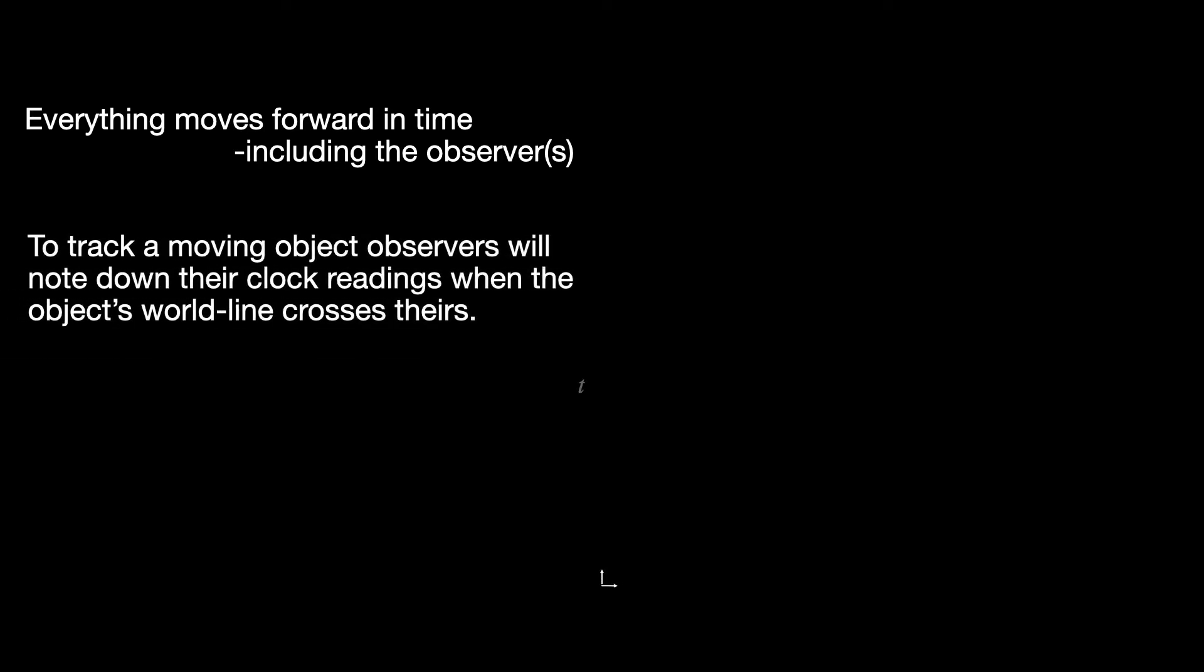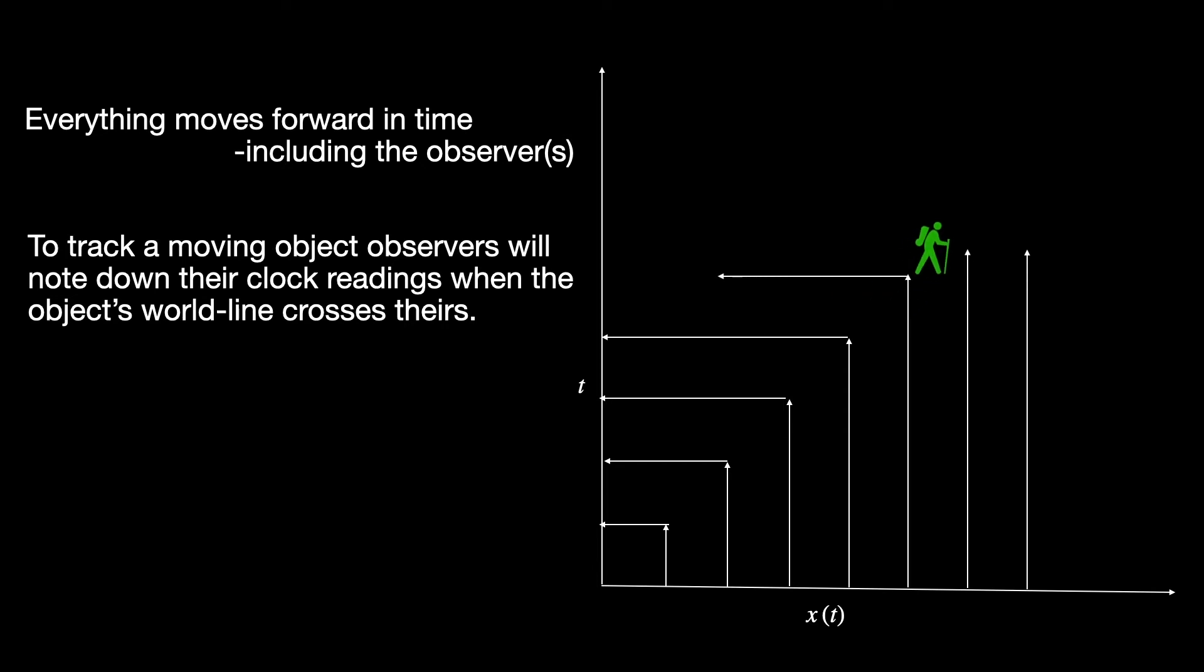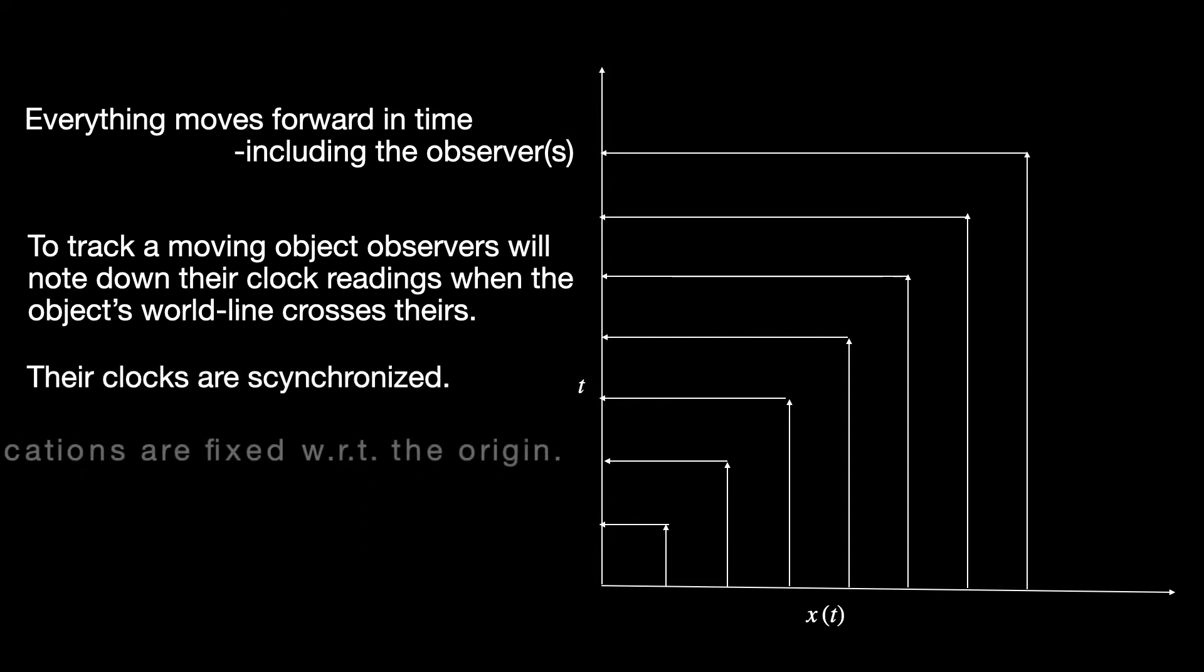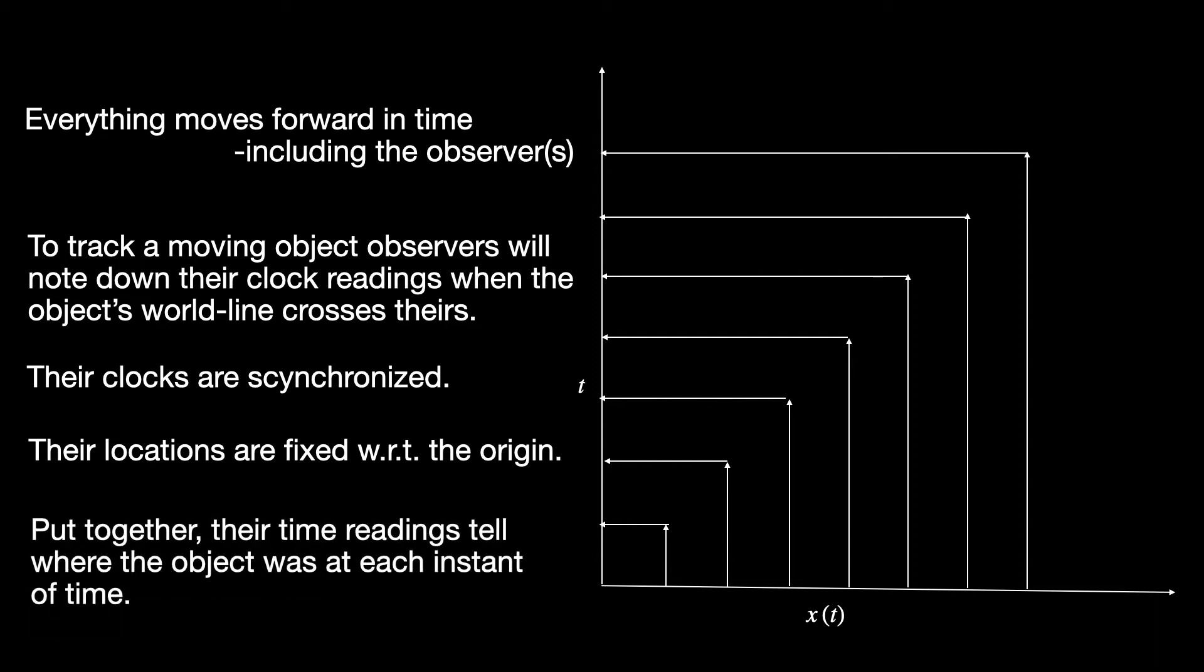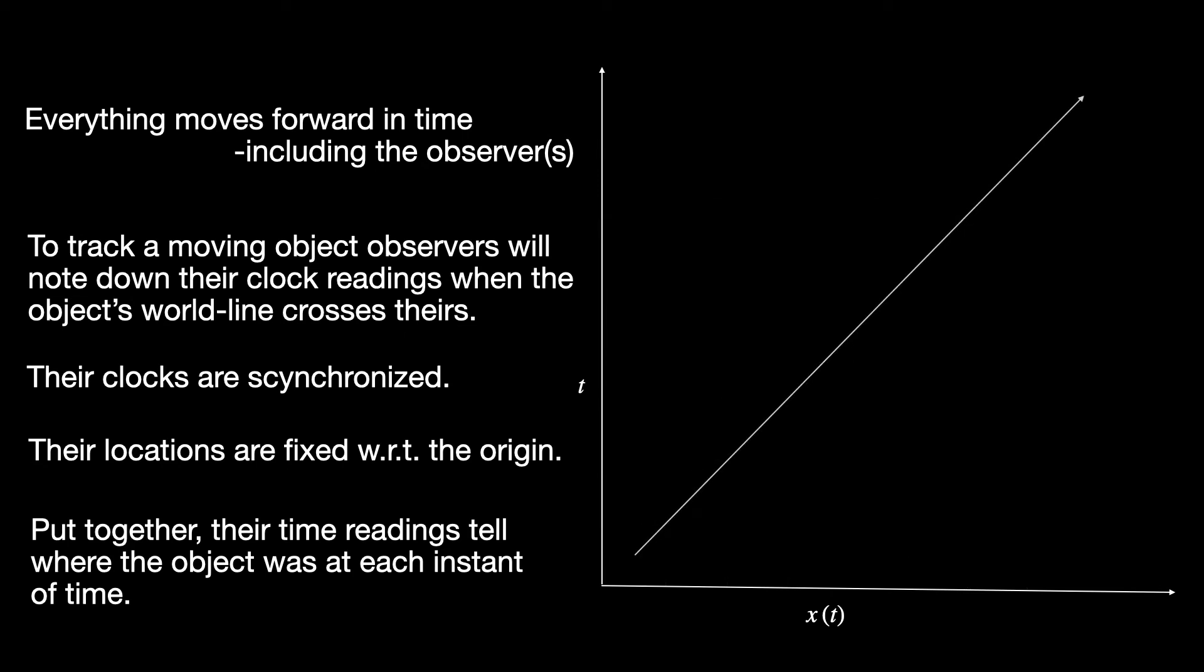To track a moving object, the team of observers in S1 frame will follow a simple strategy. Each will note down his own clock reading when he sees the object passing him. Since the clocks these observers carry are all synchronized and their locations are fixed with respect to the origin. This way, when they combine all their data, they will know exactly where the object was at any given instant of time. In other words, the track or world line of that object.